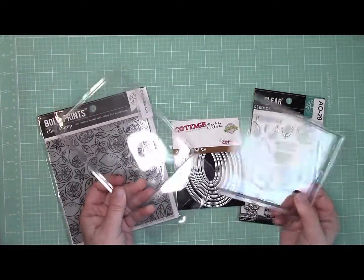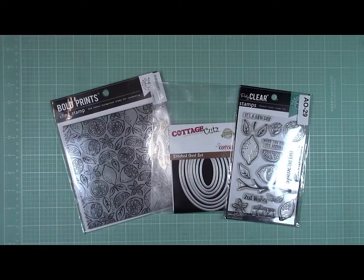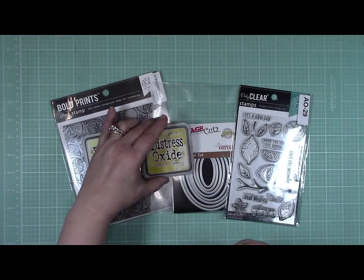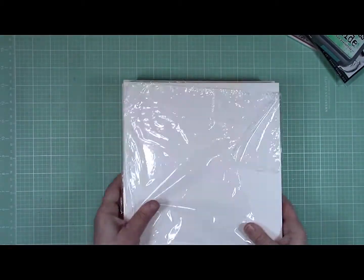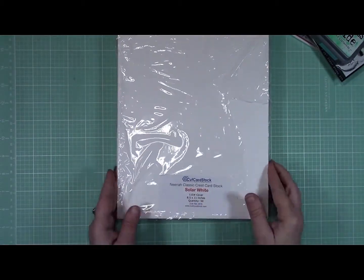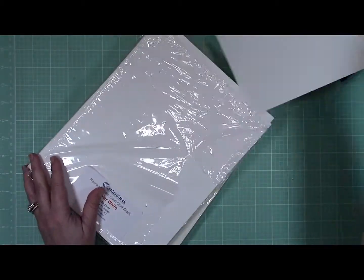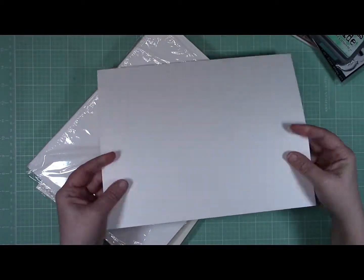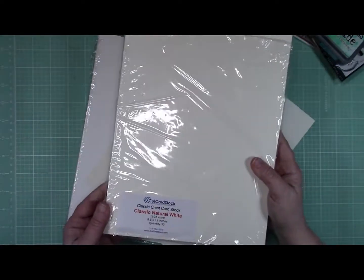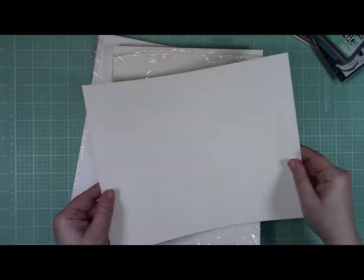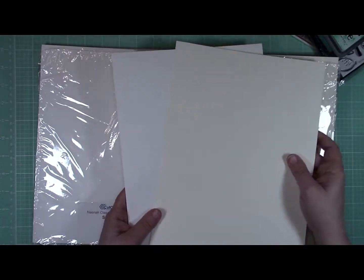I'm going to also use Squeezed Lemonade, Fossilized Amber, Spiced Marmalade, and Cracked Pistachio for my coloring. I'll be using Neenah Classic Crest Solar White for my main panel that I'll be coloring on. I'll also be using Neenah Classic Natural White, and I'll be using that for the window wells. Both of these are 110 pound weight, and you can see the difference in brightness between the two of them.